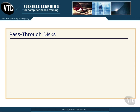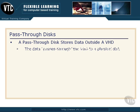Let's turn our attention for three or four minutes to pass-through discs. A pass-through disc is a disc that stores data outside a virtual hard disk — the data simply passes through the VHD to that physical disk location. When you're running a virtual machine and storing quite a bit of data, it's more efficient to pass it through to the disk subsystem, which is faster and more efficient. We can set that up as a pass-through disk store.